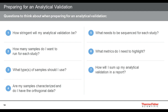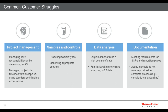How do you highlight those metrics, and how do you sum them up in your validation report so an auditor can see direct evidence you fulfilled all analytical validation requirements? Another commonly overlooked question: do you have an SOP from library prep to variant calling? A good SOP not only tells the baker how to bake the cake but gives the baker the importance of baking the cake — it explains why you're running the assay, not just provides stepwise directions on how to do it.